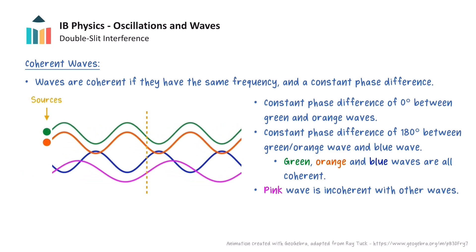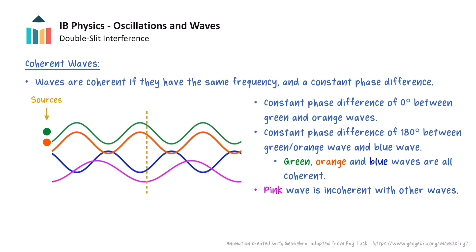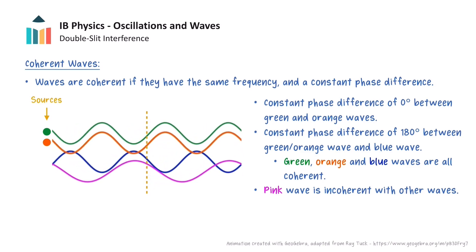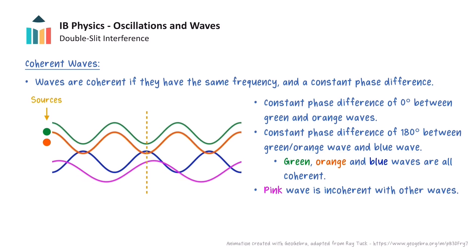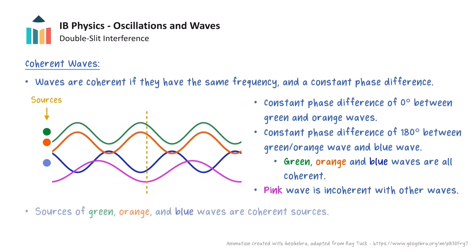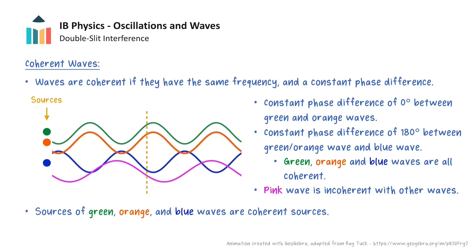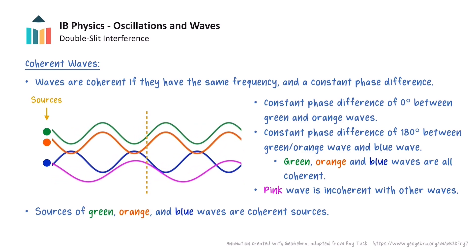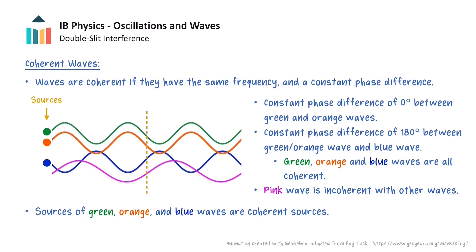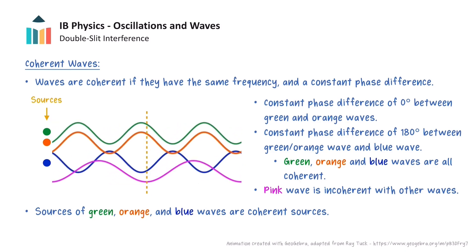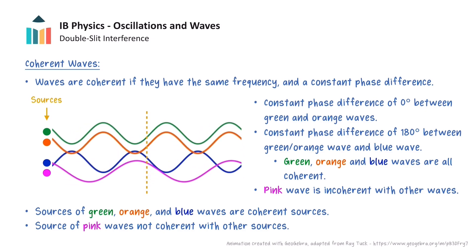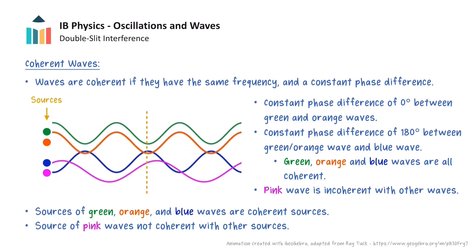Sources that produce waves with the same frequency and a constant phase difference are known as coherent sources. The source of green waves and orange waves are in phase, so they are coherent sources. And even though the source of blue waves is out of phase with the green and orange sources, the phase difference is constant, so this is also coherent. However, the phase difference between the blue and pink sources is constantly changing, so these are not coherent sources.